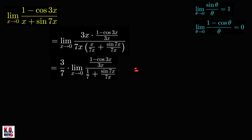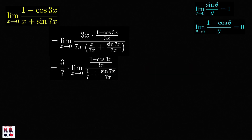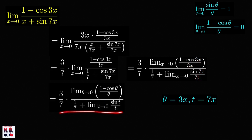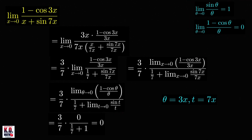From here we can compute the limit: the numerator gives (1 − cos(3x))/3x which approaches 0, and the denominator gives 1/7 times sin(7x)/7x plus 1. Making substitutions θ = 3x and t = 7x and applying both results, we get 3 over 7 times 0 divided by (1/7 + 1), which is equal to 0.